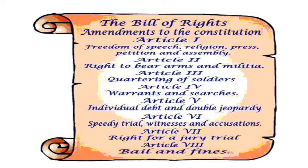Article 4 puts limits on warrants and searches of houses, which led to the idea of having search warrants. The Fifth Article is an important article about double jeopardy, meaning not being tried for the same crime twice. So if a defendant has been found not guilty, this is supposed to limit another trial for the same crime.